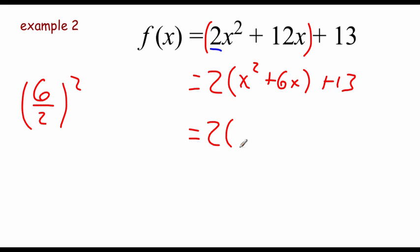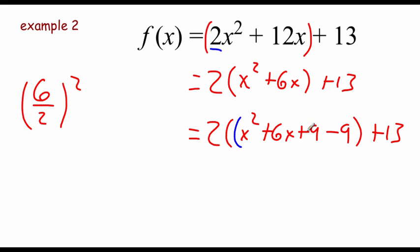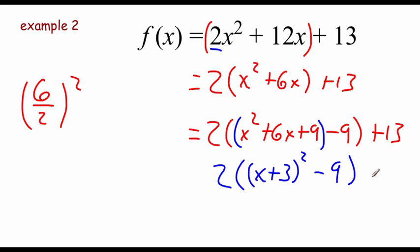Inside of our parentheses we've got 2 times x squared plus 6x. We're going to add this 9, but also subtract 9 right away — add zero so we don't throw the balance off. Then we close the parentheses and put the plus 13 on the end. Regrouping, multiply to 9 and add to 6 gives x plus 3 and x plus 3, so we rewrite that as x plus 3 squared. We still have the outer parentheses with the 2 and the minus 9 inside, plus the 13 on the end.